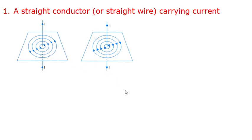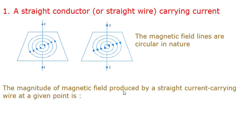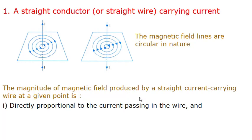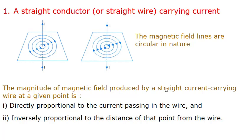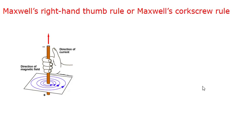Whenever current is flowing in the upward direction the magnetic field is in the anticlockwise direction. The magnitude of magnetic field produced by a straight current-carrying conductor at a given point is directly proportional to the current passing in the wire and inversely proportional to the distance of that point from the wire. The direction of magnetic field produced by a straight current-carrying conductor can be found out by using Maxwell's right hand thumb rule or Maxwell's cork screw rule. Let us first discuss Maxwell's right hand thumb rule. Imagine that you are grasping the current-carrying wire in your right hand so that your thumb points in the direction of current.